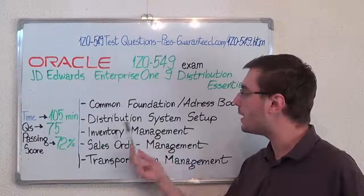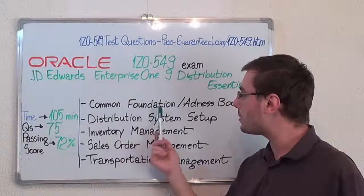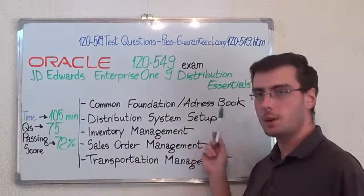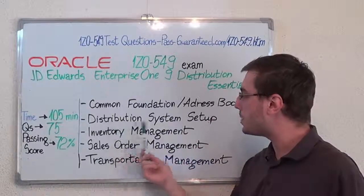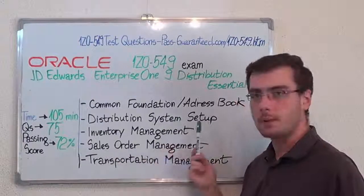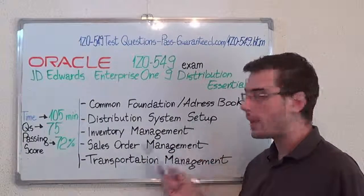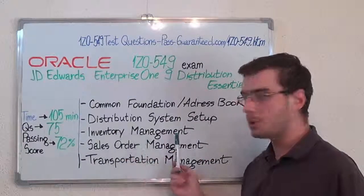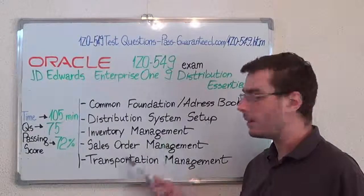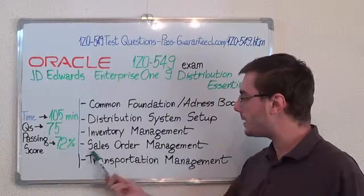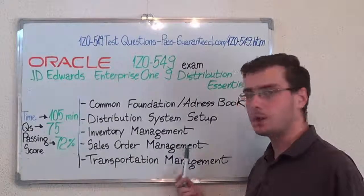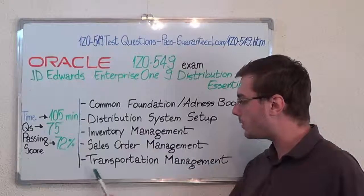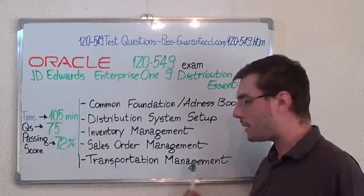The first one, common foundation/address book. Second, Distribution System Setup. After that, Inventory Management. Then Sales Order Management. And last one, Transportation Management.